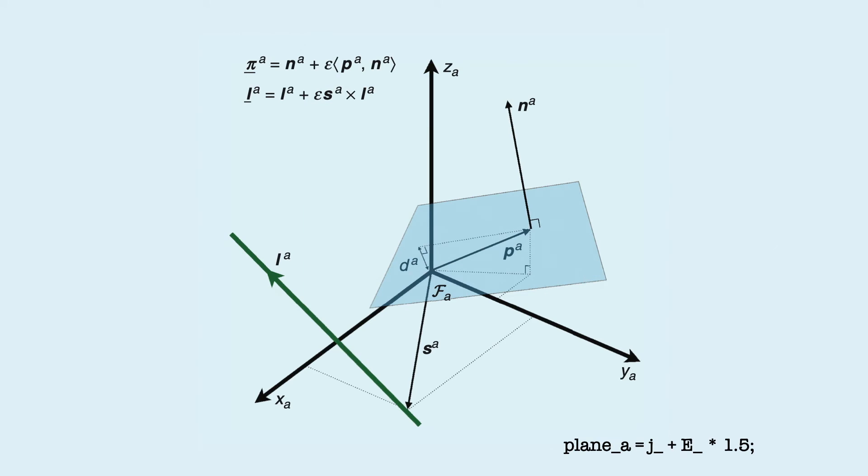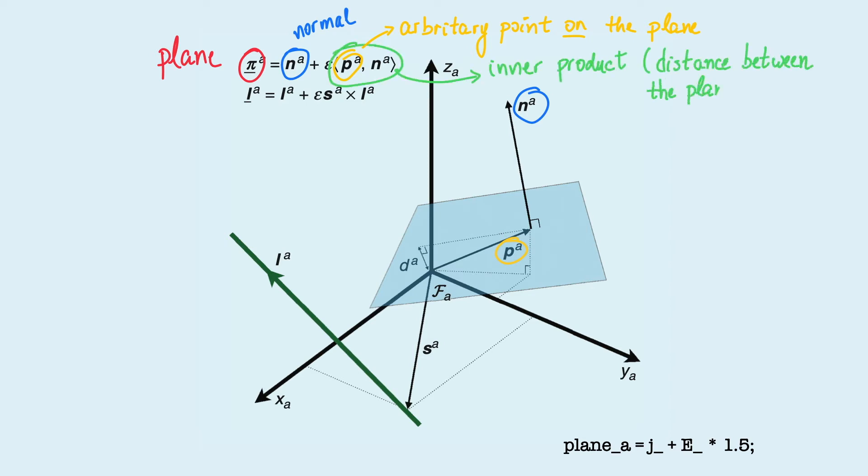Several geometric primitives can be naturally written as elements of dual quaternion algebra. For example, a plane can be represented by its normal and an arbitrary point on it. Therefore, the primary part of the dual quaternion contains the normal, whereas the dual part contains the inner product between an arbitrary point on the plane and its normal. Remarkably, this inner product gives us the distance between the plane and the origin of the reference frame.